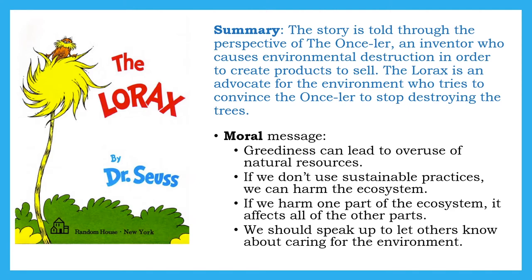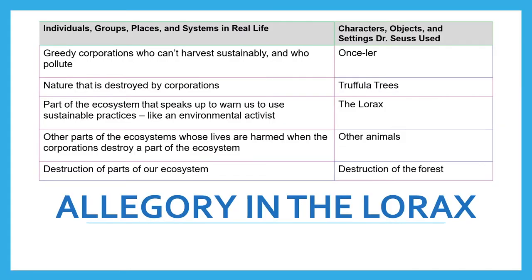Let's take a look at how these messages are developed through some of the narrative elements in the story. Characters and setting play a big part. In this chart, the left-hand side shows individuals, groups, places, and systems in real life. You'll be working with a chart like this to plan your own allegory — think about those individuals, groups, places, and systems within the research you have done for whichever historical event you are choosing.